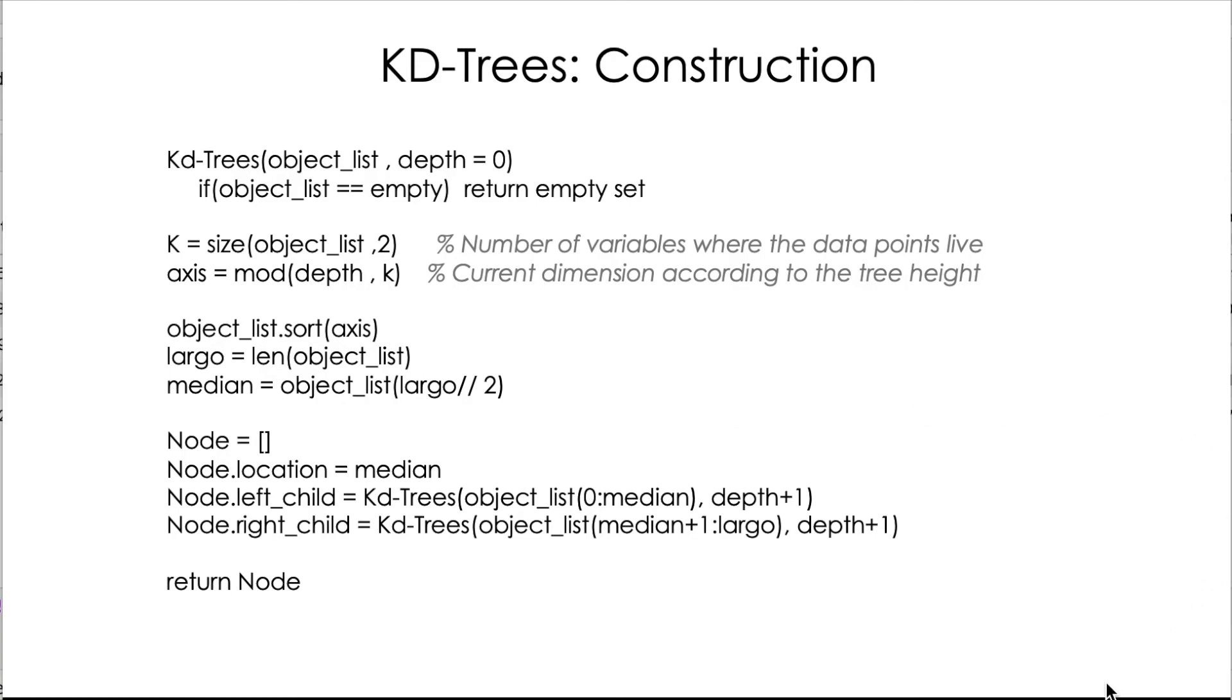So this is the pseudocode and we are going to actually implement this in Python. But let's take a look to it. This is actually very simple. We just need the object list and the indicator of the depth of the tree. So if we have no data points, we just return an empty set. We need to see the dimension of our problem, which is basically the number of columns for the data points. And then we need to calculate what is the current axis and it's basically the depth of the tree modulo K, because we are rotating the axis. So we're going to need to increase our axis. And as soon as we reach the last dimension, we go back to the first one. So we sort our data point list according to the axis. We calculate the length of our data points because we're going to need that variable later.